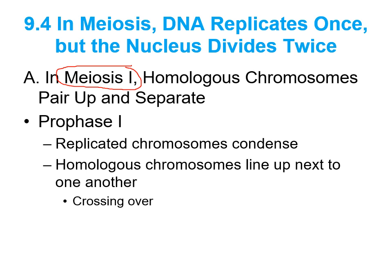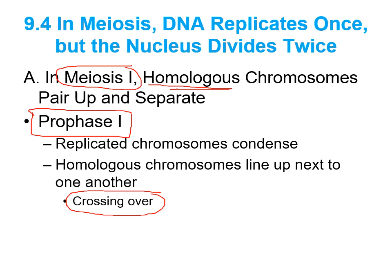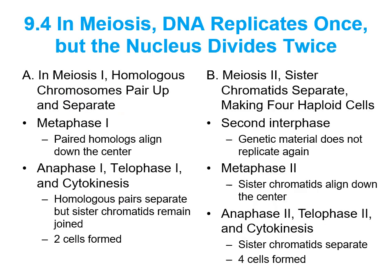Meiosis part one is going to focus on the homologous chromosomes — the pairs you inherit from mom and dad — and how we can pair them up and separate them. Also in meiosis one, there is a unique event called crossing over, which allows the homologous chromosomes to shuffle genetic information, increasing our genetic variety. Crossing over exclusively occurs in prophase one. If we compare the first part of meiosis and the second part, we're going to see events we're already familiar with: prophase, metaphase, anaphase, and telophase — the same as in our last chapter, except we do everything twice.